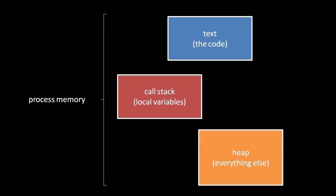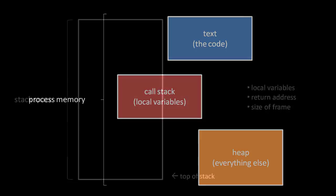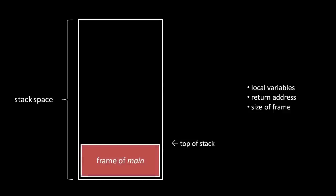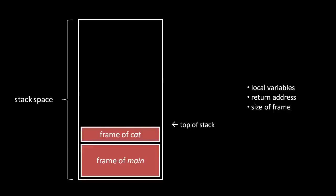The stack and heap are both for storing data. The stack stores the local variables used by the process, and the heap stores everything else. The stack is a contiguous chunk of memory that starts out unused. When the first function is called — let's call it main — its local variables are stored on the stack in a grouping called a frame. When main invokes another function, let's call it cat, the local variables of cat are stored in another frame on top, along with the size of the frame and the return address to jump back to when execution returns from cat.